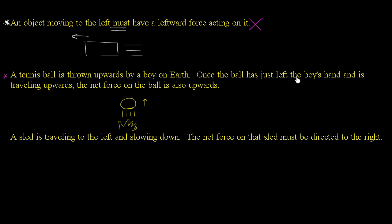Once the ball has just left the boy's hand and is traveling upwards, so this is the situation that we're talking about, the net force on the ball is also upwards. So let's think a little bit about all of the forces that are on the ball. This ball right here, it's near the surface of the earth. It's going to have the force of gravity acting on it, or the force of earth's gravity pulling on it. So you're going to have the force of gravity pulling down on it.